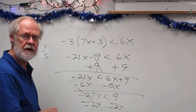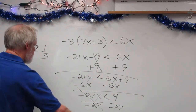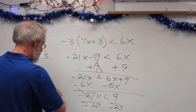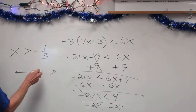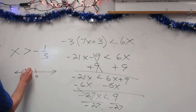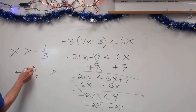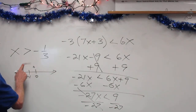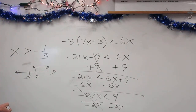So x is greater than negative one-third. If graphing that, you estimate on the number line: here is 0, and if this is negative 1, then negative one-third is right about here. Since x is greater than negative one-third, the arrow goes to the right, in the greater-than direction.